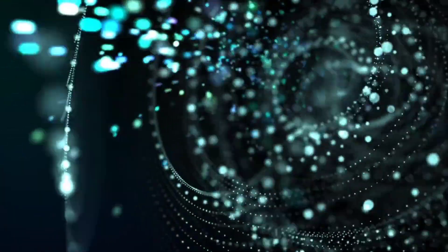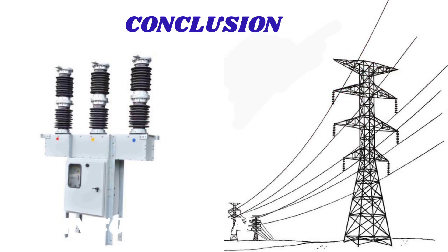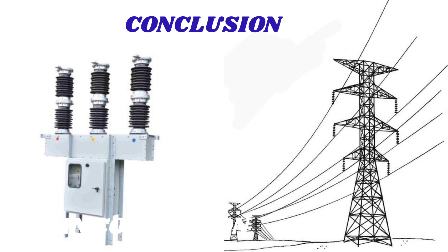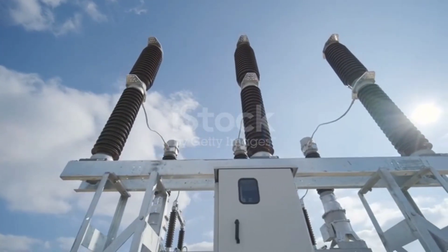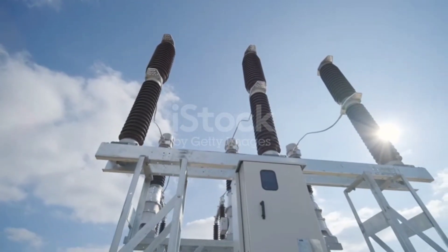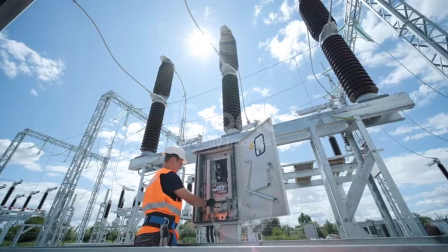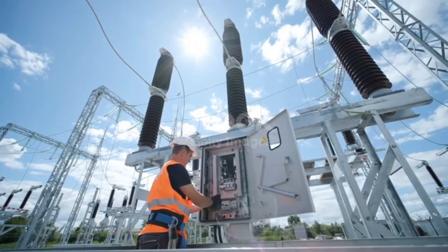In conclusion, vacuum circuit breakers offer a reliable, efficient, and environmentally friendly solution for medium voltage applications. Their compact design, low maintenance requirements, high reliability, fast fault clearance, low operating noise, and high interrupting capacity make them an ideal choice for industries such as power distribution, transmission, and industrial applications. By utilizing VCBs, industries can optimize their electrical infrastructure, reduce downtime, and contribute to a more sustainable future.